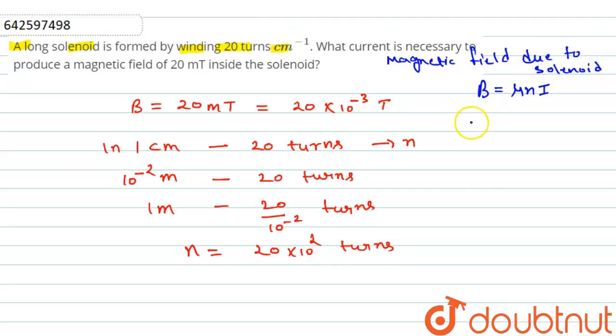So students we can write I is equal to B over mu naught n.